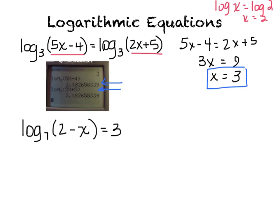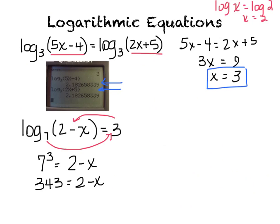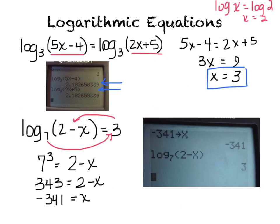On this one I do not have a log on both sides, so I can't set arguments equal — I have to go to exponents. When I only have one log I go to exponents: 7 cubed equals 2 minus x. 7 cubed is 343. I subtract 2 and divide by negative 1, so x equals negative 341. I store that as x, type in the left side, and see that it equals 3, confirming negative 341 is the solution.